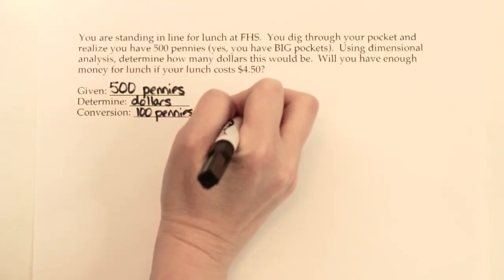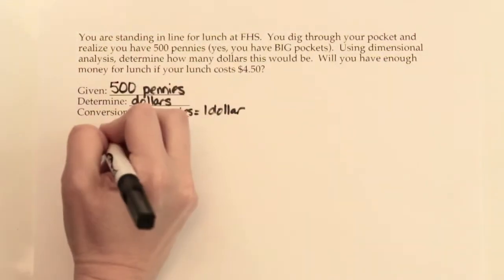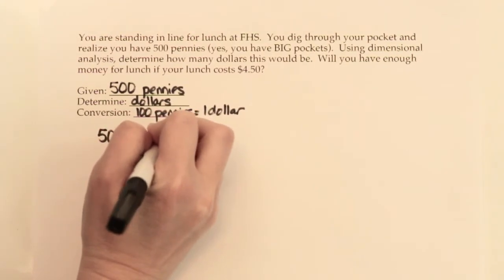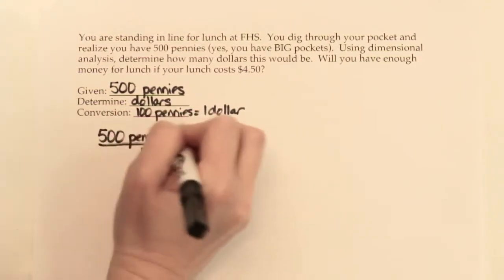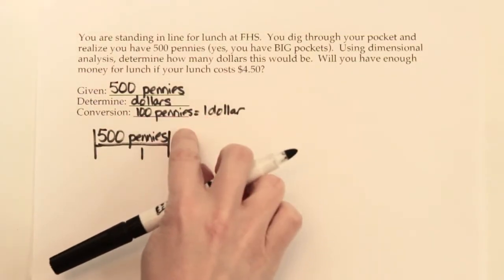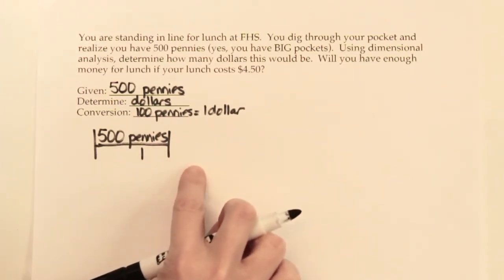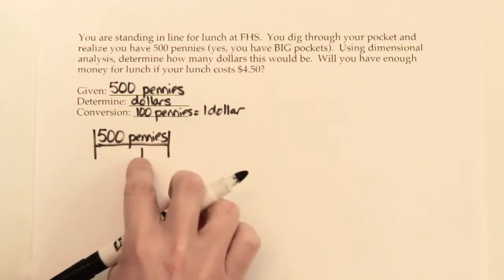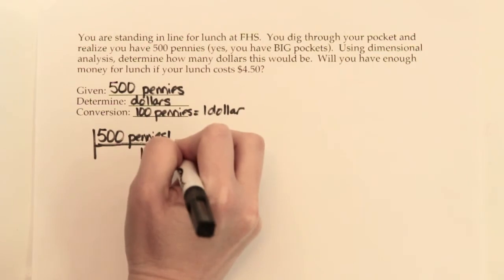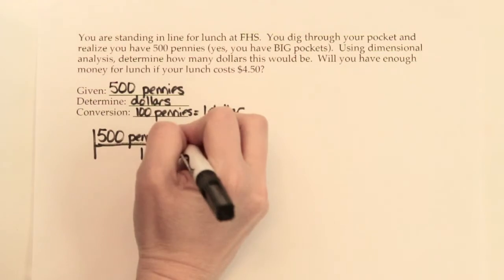All conversion factor problems, all factor label problems, always start with the given over the number one. So we're going to take 500 pennies and put that over the number one. Now we're going to take our conversion factor and we have to decide if we put one dollar over 100 pennies or 100 pennies over one dollar. Because we want the pennies to cancel out and go away, I'm going to put the 100 pennies part of this conversion factor on the bottom and the one dollar part on the top.